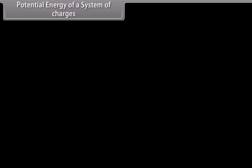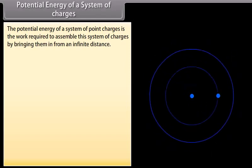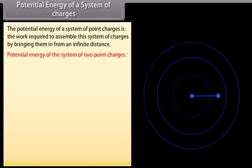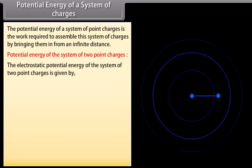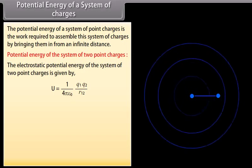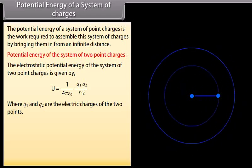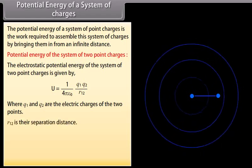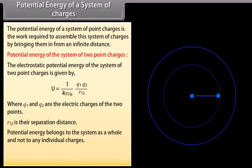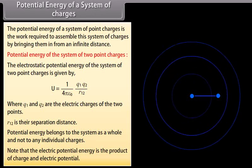Potential energy of a system of charges. The potential energy of a system of point charges is the work required to assemble the system by bringing charges in from an infinite distance. For two point charges, the electrostatic potential energy is U equals 1 over 4π ε₀ multiplied by Q1·Q2 over R12, where Q1 and Q2 are the charges and R12 is their separation distance. Potential energy belongs to the system as a whole, not to any individual charge. Note that electric potential energy is the product of charge and electric potential.